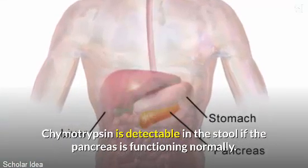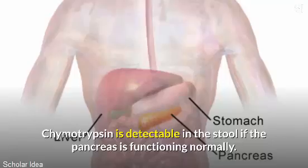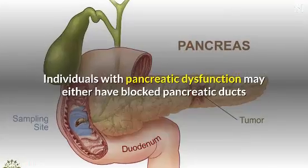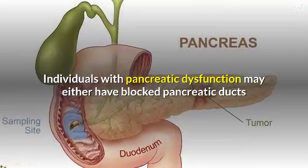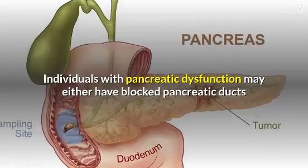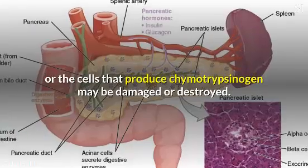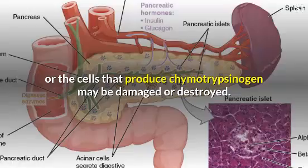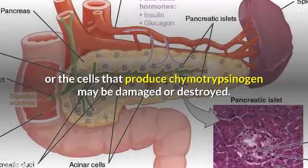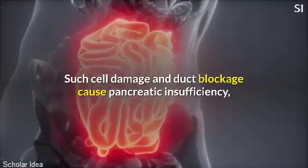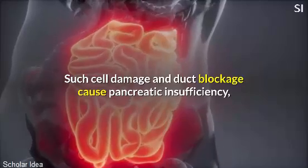Chymotrypsin is detectable in the stool if the pancreas is functioning normally. Individuals with pancreatic dysfunction may either have blocked pancreatic ducts, or the cells that produce chymotrypsinogen may be damaged or destroyed.